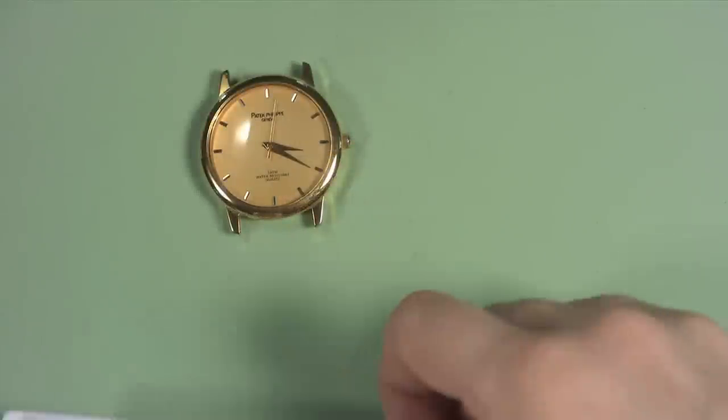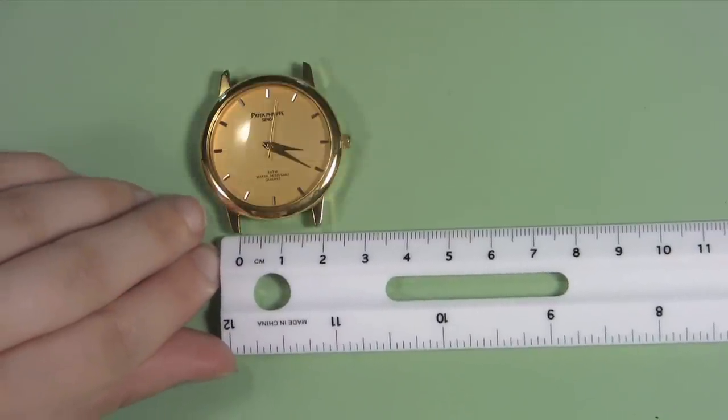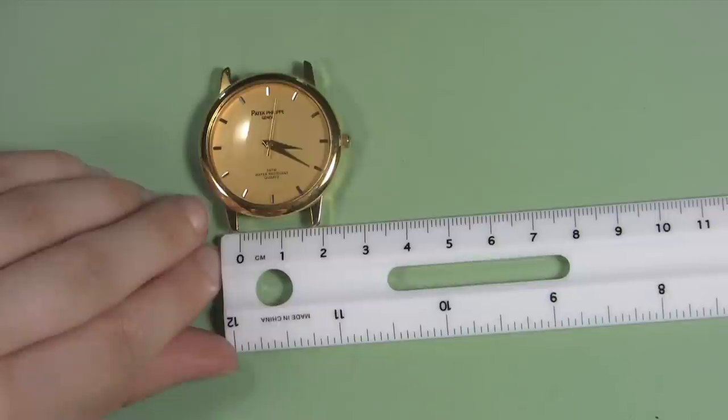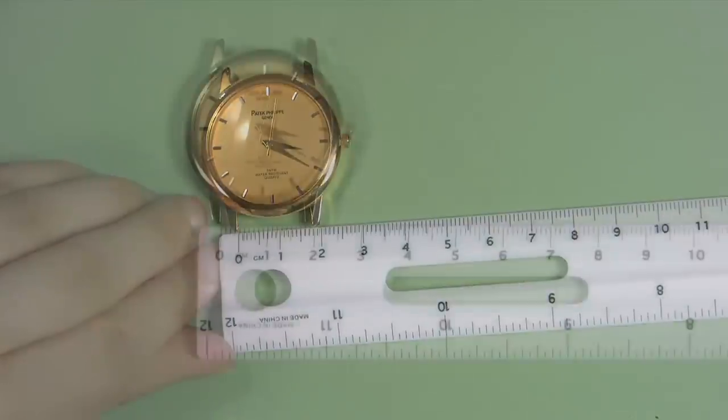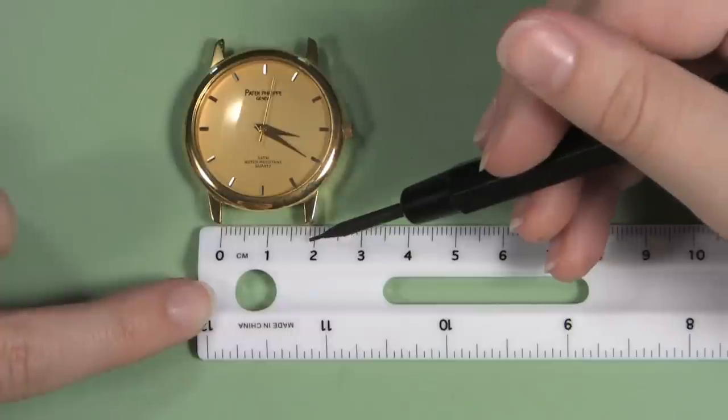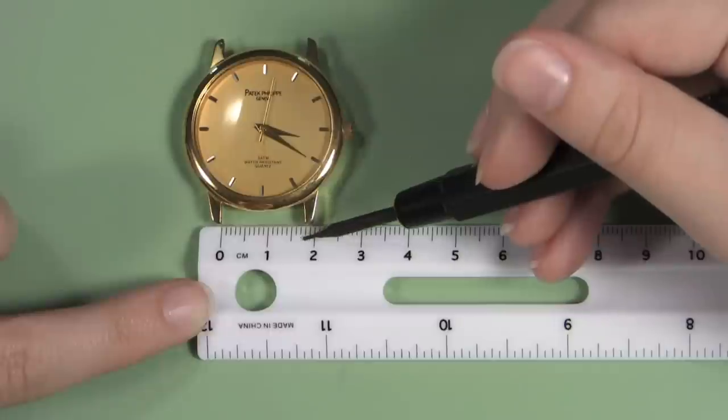Using the ruler, take your watch case and line the inside of the watch lug up with the zero marker on the ruler. Be sure to use the metric side of the ruler as most watch band widths are given in millimeters. When the watch lug is aligned, read the measurement on the ruler where the inside of the second lug lines up. Estimate smaller if the edge is between two millimeter marks on the watch band.